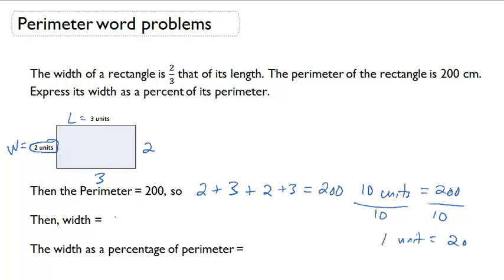Let's go back now and calculate our width. Our width is two units, so two times twenty is forty centimeters.